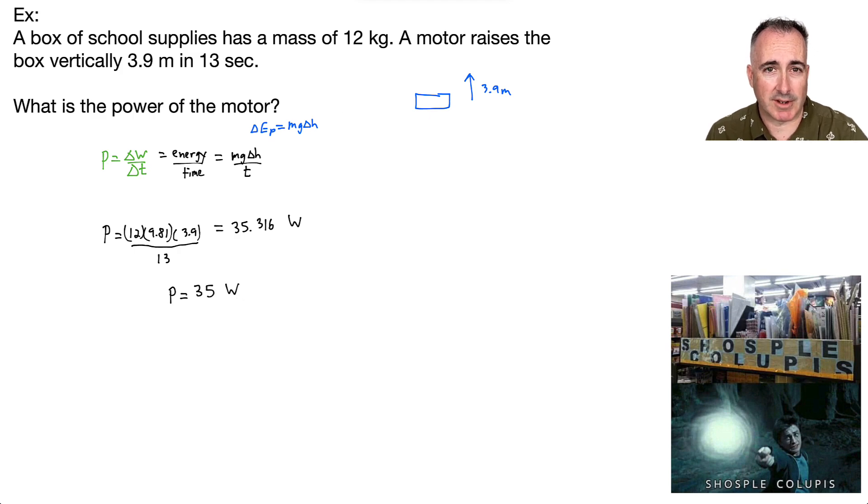That means I'm just going to say 35 watts. There we go. We've solved it. Now, what if in the question they'd instead said, oh, the motor has a current of blah, blah, blah through it. What's the voltage or what's the potential difference? And that's fine.